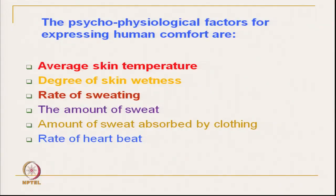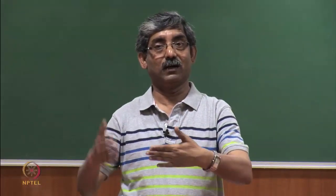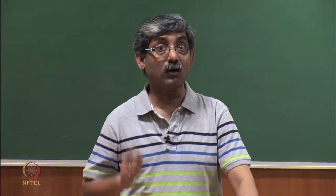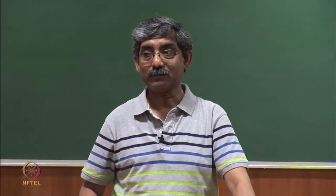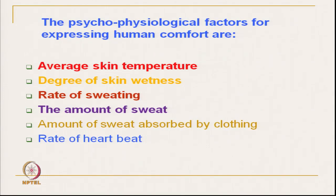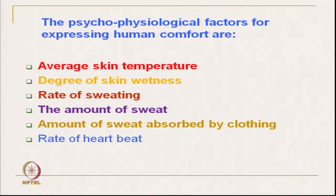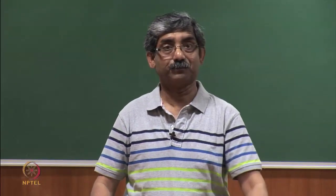Rate of sweating also depends on the physiology of a person, but depending on the type of cloth and type of activity, the rate of sweating can be controlled. Then, amount of sweat developed — if the amount of sweat is high, our clothing's function is to absorb this sweat. Amount of sweat absorbed by the clothing, and lastly the rate of heartbeat — all these things are related to psychophysiological factors which express human comfort.